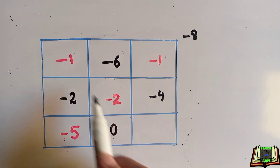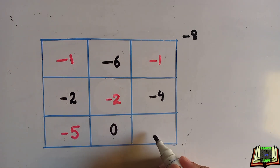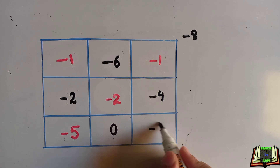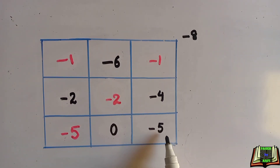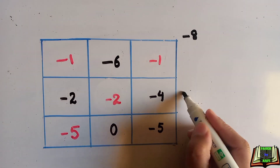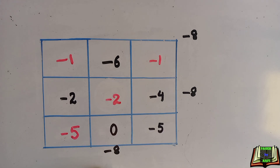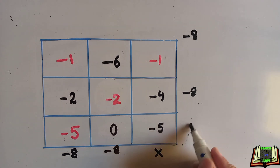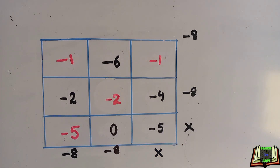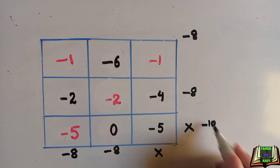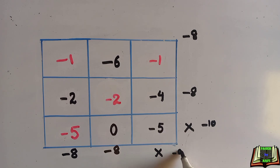Here, minus 1 and minus 2 gives minus 3, so we add minus 5 to make minus 8. We have filled the square, but now we cross-check every row, column, and diagonal. Some are adding up to minus 8 correctly, but this row and this column are adding up to minus 10, not minus 8. Therefore this is not a magic square, because not all rows, columns, and diagonals satisfy the condition.